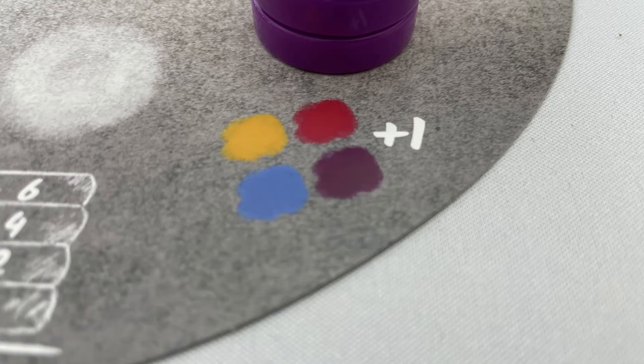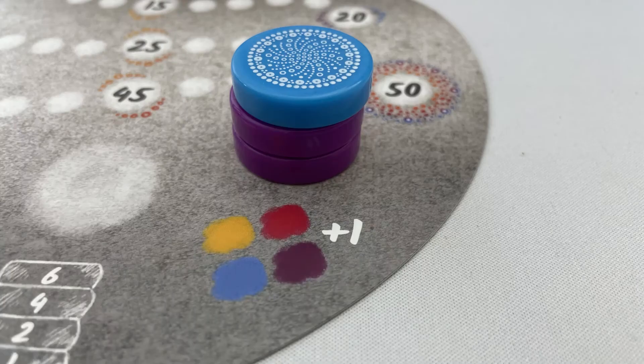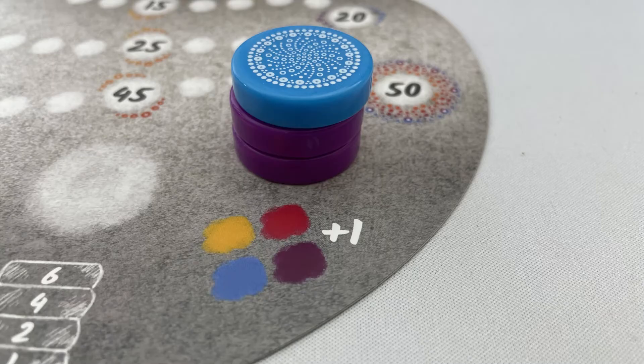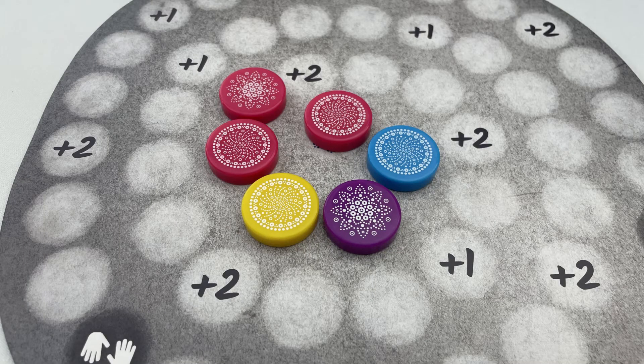The fifth scoring space scores for different color stones for that tower in that space, plus one point. For example, this tower has two different colors, so it's worth three points. Place the top stone of each of the scored towers in the center of the mandala board and gain bonus points using the rules described earlier.